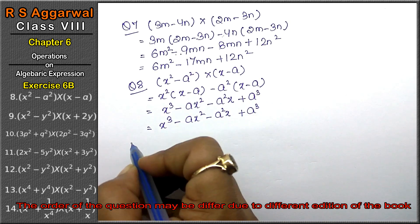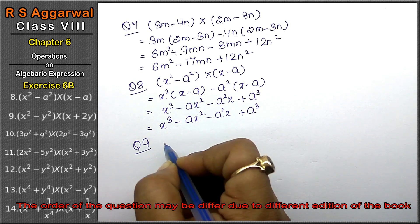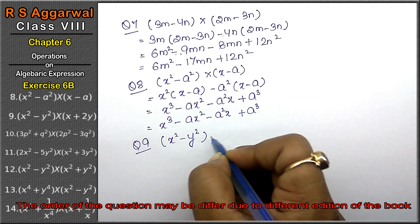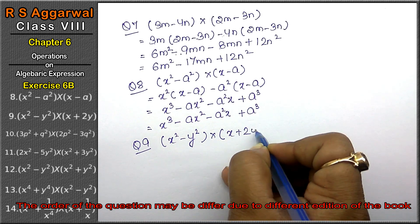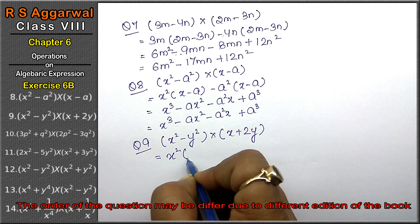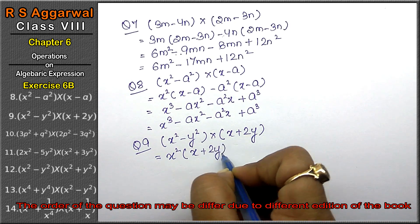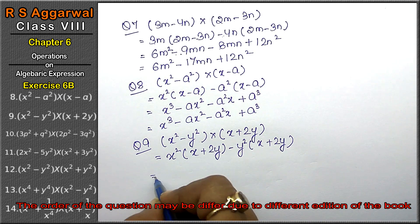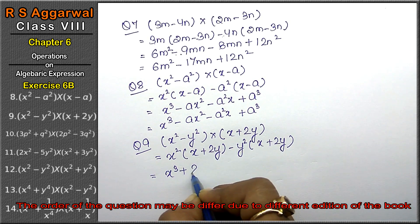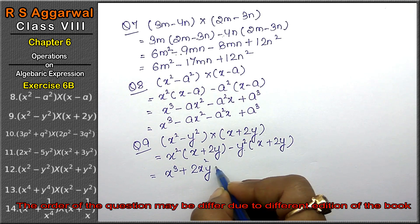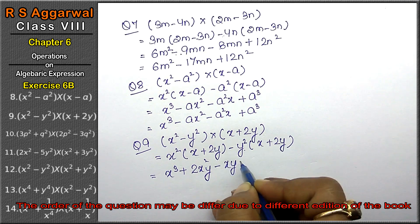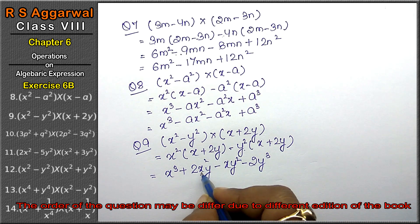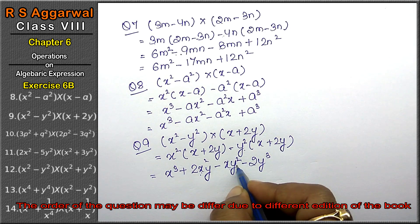Let's do question number nine of Exercise 6B, that is algebraic expressions. Question number nine is (x squared - y squared) multiplied by (x + 2y). So: x squared multiplied by (x + 2y), minus y squared multiplied by (x + 2y). We get x cubed plus 2x squared y, minus xy squared, minus 2y cubed. These terms cannot be combined, so this is the answer.